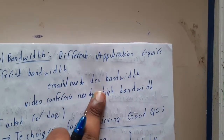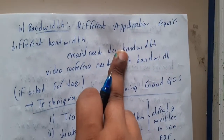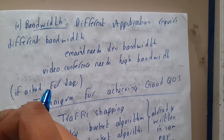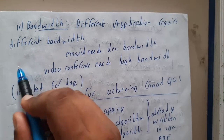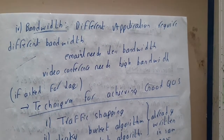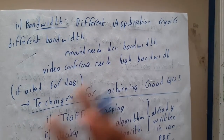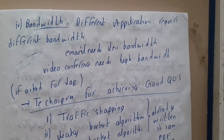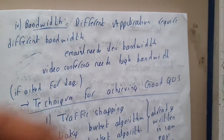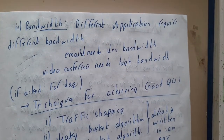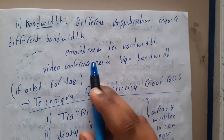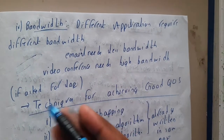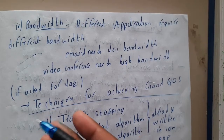Similarly, different applications require different bandwidth. Bandwidth is simply the rate of transmission. We say our Wi-Fi is 100 Mbps, 200 Mbps, or 50 Mbps — that is the bandwidth, meaning the maximum rate at which a file can be transferred. Email needs less bandwidth whereas video conferences and video calls need more.